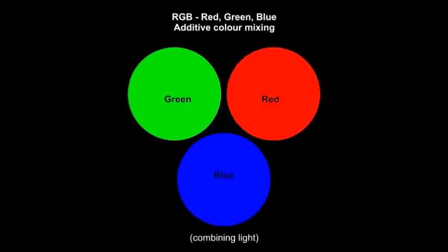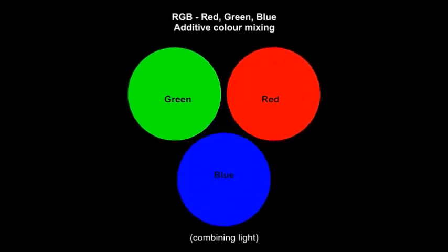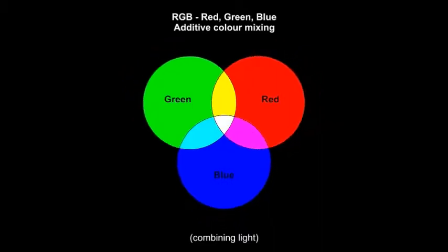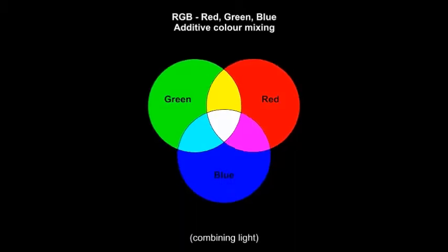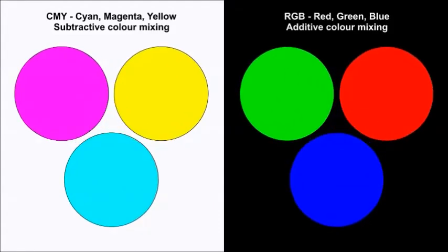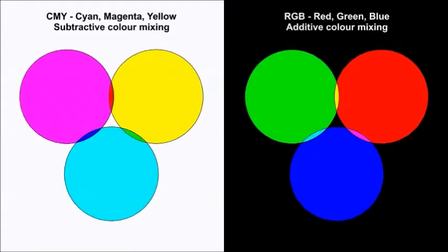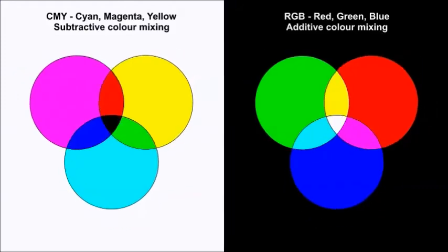Absorbed colors and additive color mixing are also called RGB colors for the red, green, and blue primary colors. Computer monitors are a common example of RGB colors. It is important to recognize the connection between absorbed light and reflected light and between additive and subtractive color mixing.